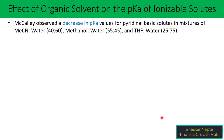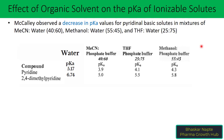Mac-Calley observed a decrease in pKa values for pyridinal basic solutes in mixtures of ACN:water 40:60, methanol:water 55:45, and THF:water 25:75. The pKa value of pyridine in water is 5.17, and it decreased in ACN, THF, and methanol. The same is observed for 2,4-dimethyl pyridine — its pKa in water is 6.74 and further decreased in the presence of ACN, THF, and methanol. A decrease in pKa means a decrease in the strength of the alkaline compound.